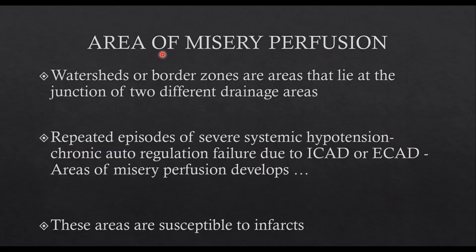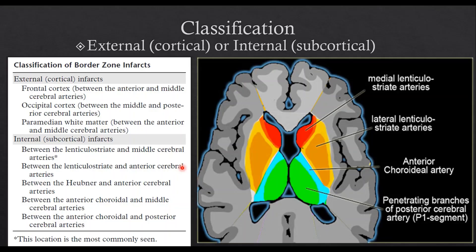Areas of misery perfusion lie at the junction of these two different drainage areas. Repeated episodes of severe hypotension lead to chronic autoregulation failure — either due to an intracranial or extracranial cause — and these areas become highly susceptible to infarcts. External watershed infarcts are divided into three: the frontal, the occipital, and the paramedian. Internal watershed infarcts will be reviewed in the next session.